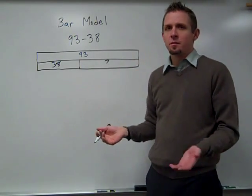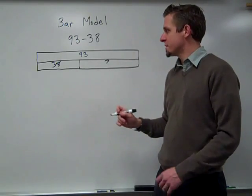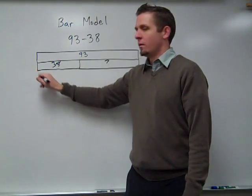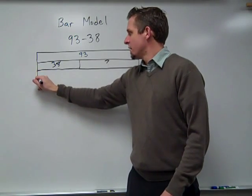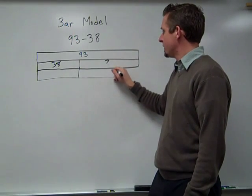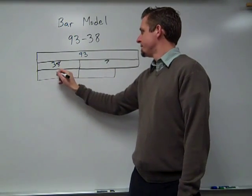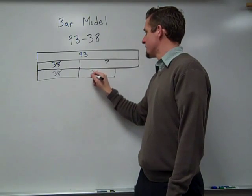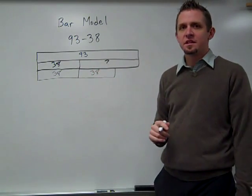This is a very flexible model so I can solve it lots of different ways. One way a student might solve it, if they're good at doubling numbers, they know that this is 38. So I could double that with another 38. So 38 plus 38, that gives me 76.